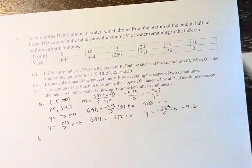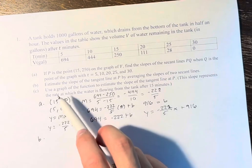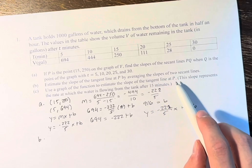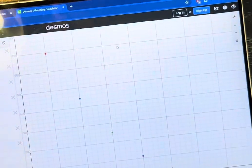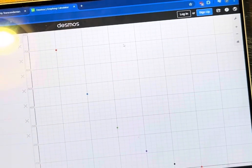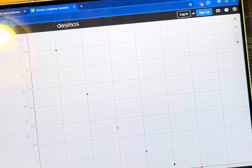And finally, in part C, we're asked to use a graph of the function to estimate the slope of the tangent line at P. So if we pull up this graph right here, just put it into Desmos, we can see the various points on the equation.